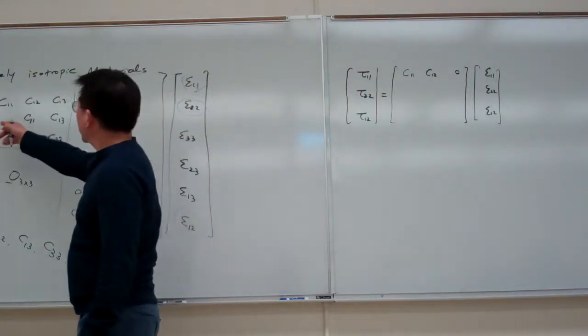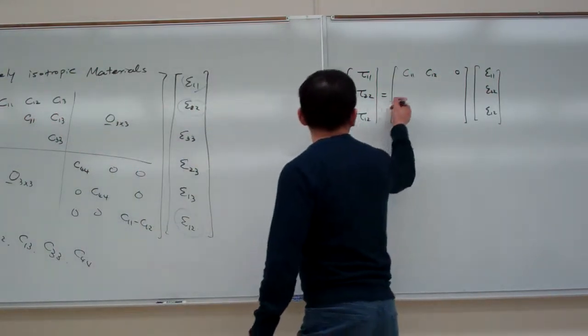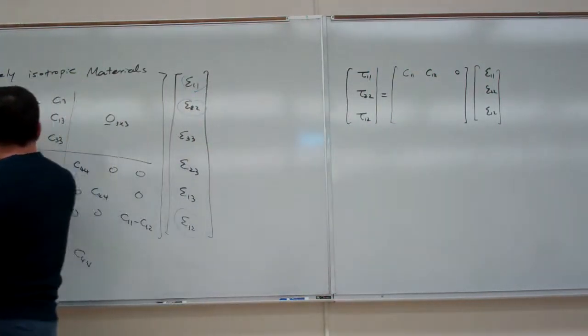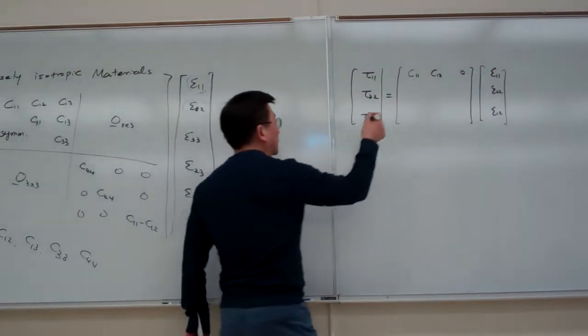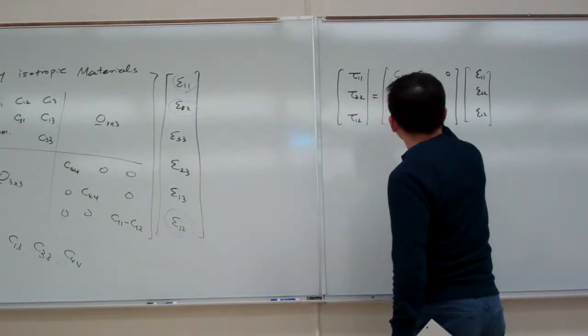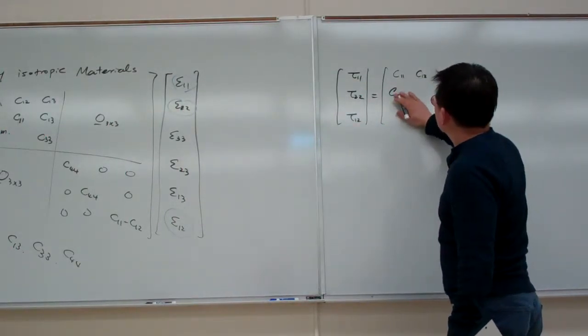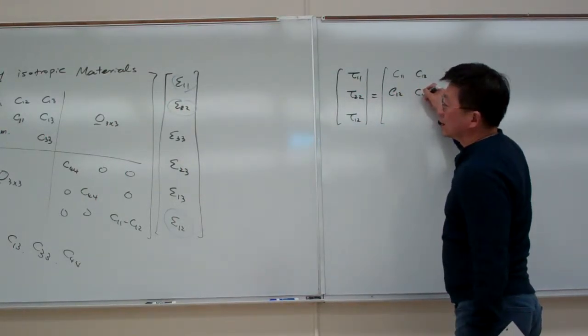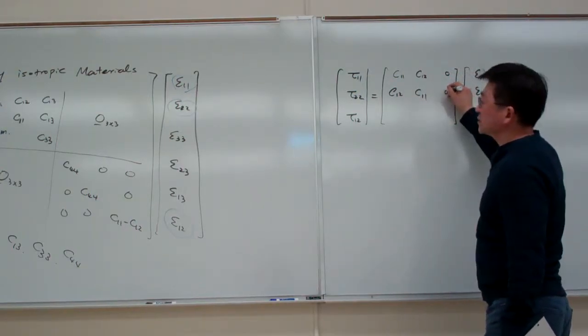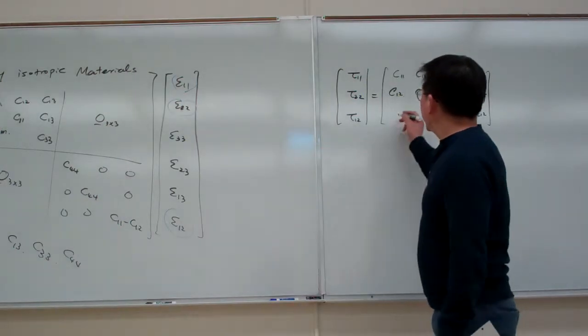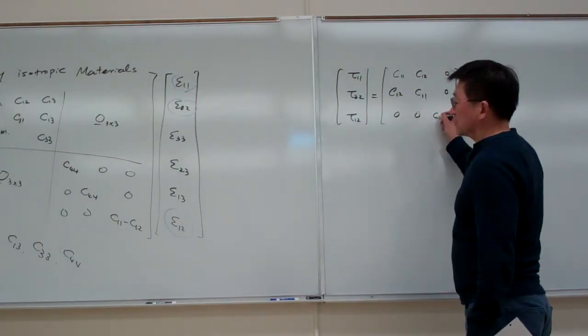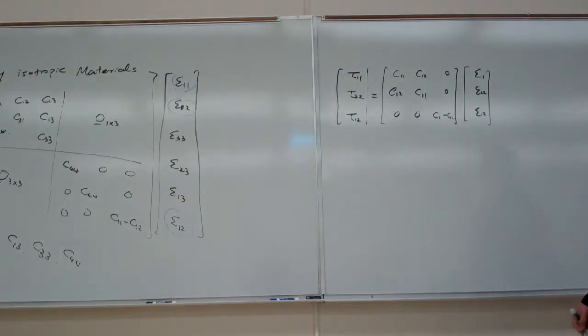And then for the second one, that is the second row. So that is, this is symmetric. So that is the C1, 2. And C1, 1, and 0. And for the tau 1, 2, basically that's 0, 0. And then C1, 1, minus C1, 2, here.